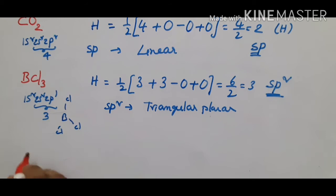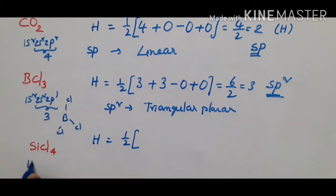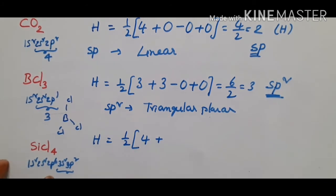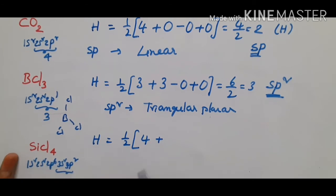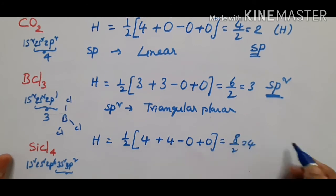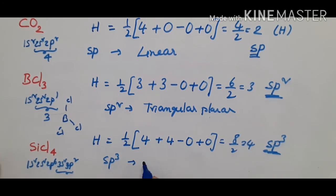Next example is silicon tetrachloride, SiCl₄. Silicon has configuration 1s² 2s² 2p⁶ 3s² 3p², giving four valence electrons. H = ½(4 + 4 - 0 + 0) = 8/2 = 4. There are four monovalent Cl atoms attached to the central silicon atom, and it is a neutral molecule. H = 4 gives sp3 hybridization, and the geometry is tetrahedral.